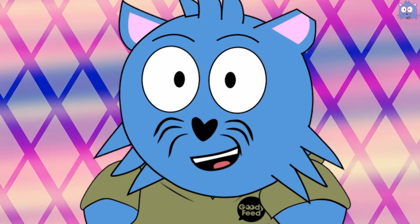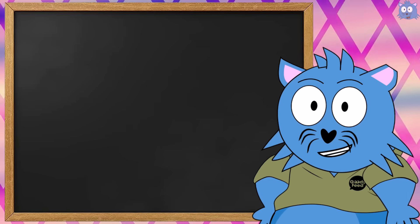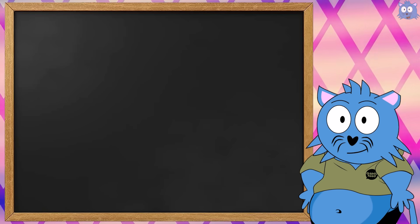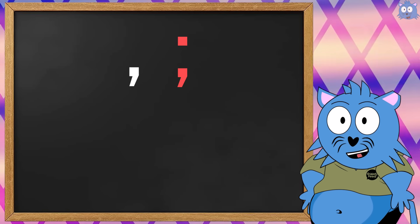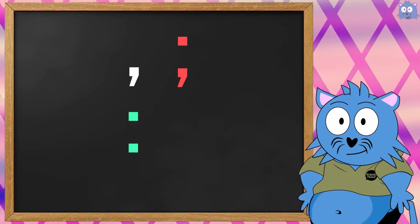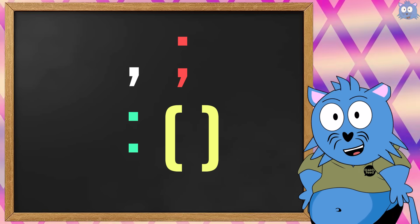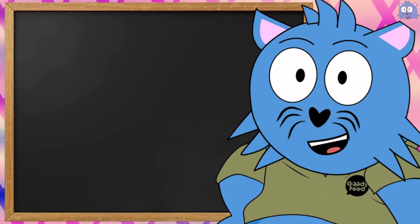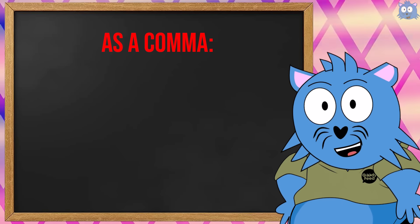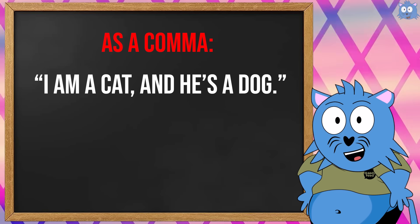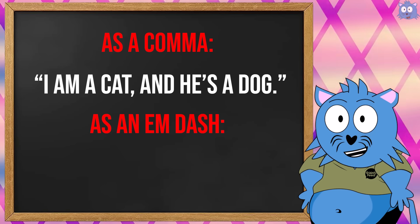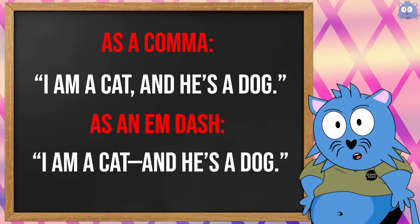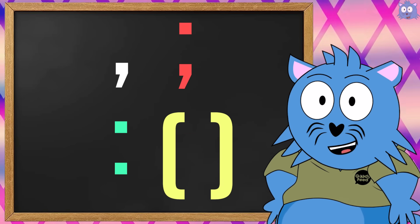What the heck are M-dashes then? This is the more versatile one, as it can be used for many purposes. You can use it like a comma, a semicolon, a colon, or a bracket, but using it makes those punctuation points more impactful. For example, the comma version would look one way, but if you use an M-dash instead, it makes the comma stronger — and it's the same for all the punctuation marks it can replace.